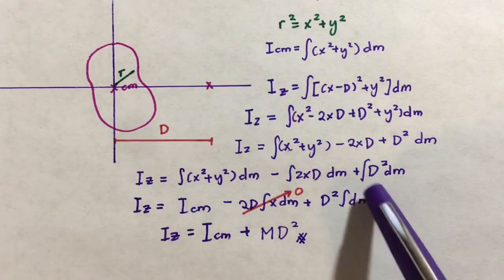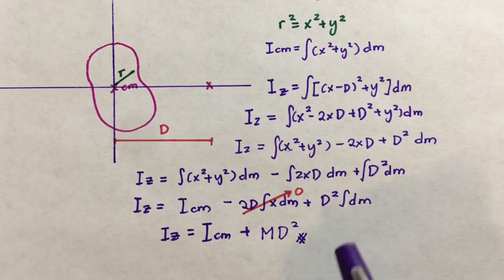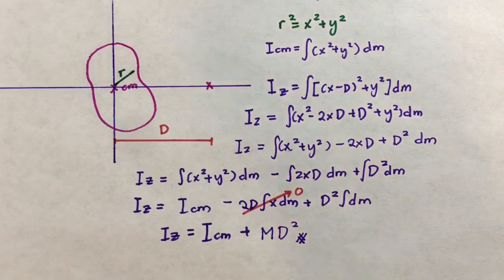Therefore, we can say that this integral evaluates to m times d-squared. And this should be the proof for the parallel axis theorem.